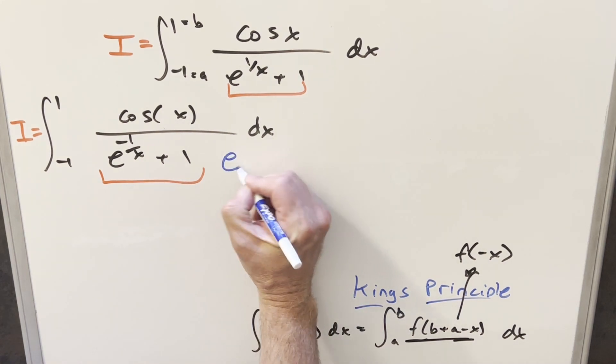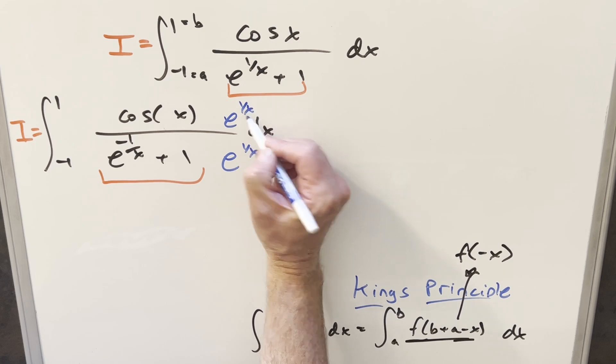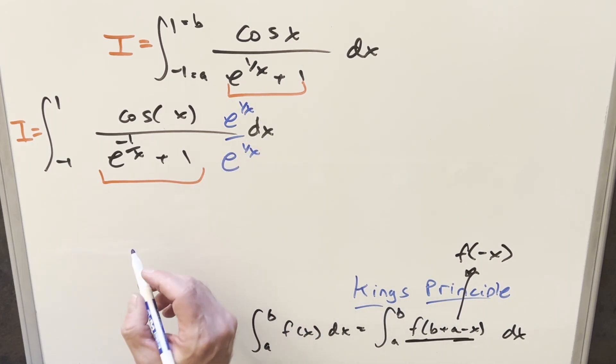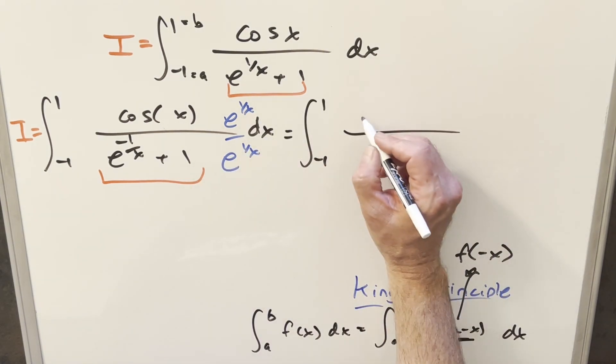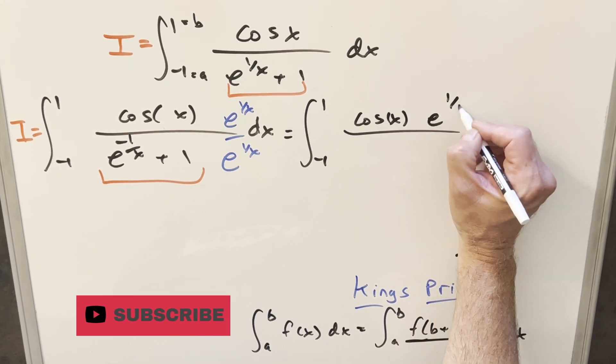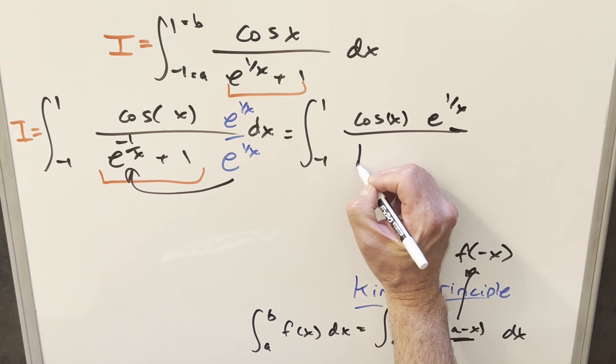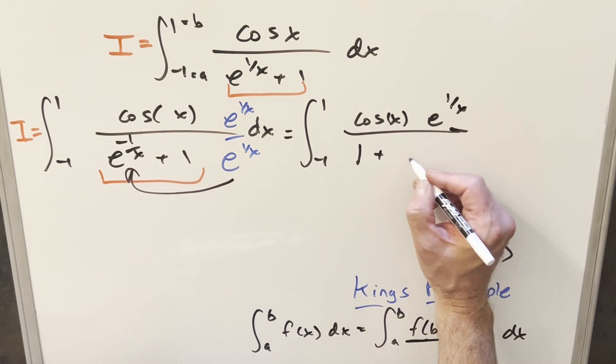So what I can try to do to fix this is let's just multiply in e to 1 over x, e to 1 over x, so I'm just multiplying by 1 here. So when I do that, now in the numerator, we get cosine x times e to the 1 over x. But then multiplying in here, that first term is going to be a 1, and then the second term is going to be just e to 1 over x.